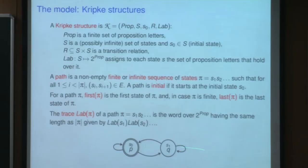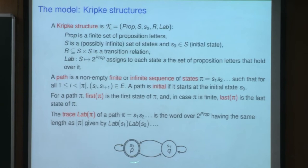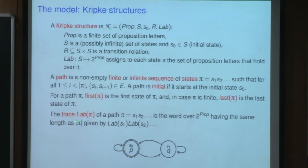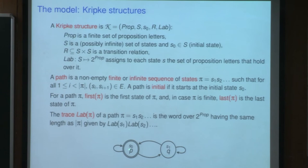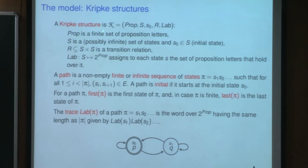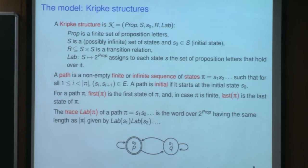We are considering Kripke structures. At the bottom you have an example with two states a0 and a1. You can associate to each state the set of proposition letters that hold at that state. We call a trace the sequence of sets of propositional letters. We can consider finite Kripke structures or infinite ones, and we consider infinite ones in this work. You can consider finite paths or infinite paths over this structure, and in this case we allow both.